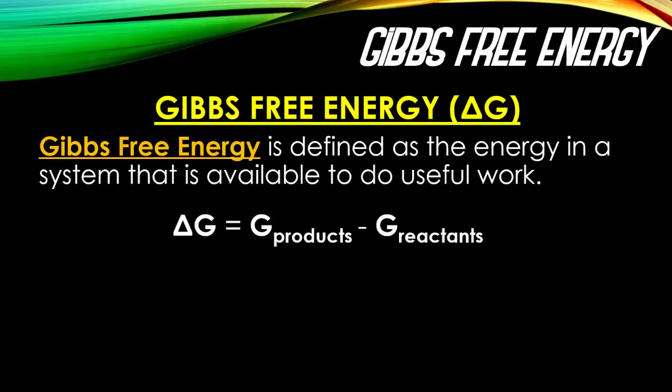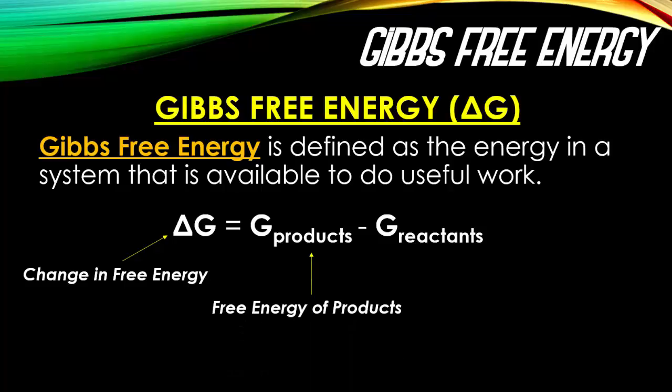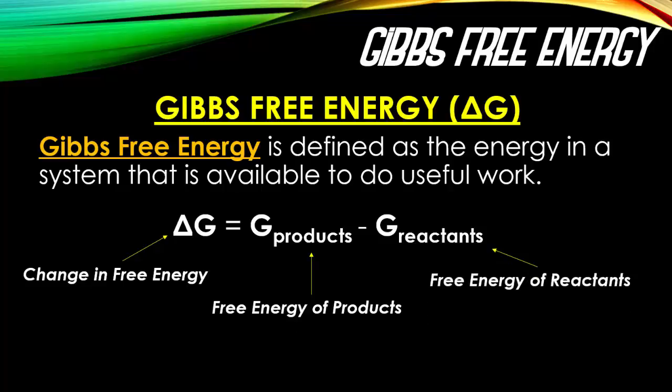Looking at this formula, delta G is equal to the energy of the products minus the energy of the reactants. Delta G means a change in free energy — whether or not our system or chemical reaction can undergo a spontaneous reaction. The G of products represents the amount of energy the products have, and the G of reactants represents how much energy the reactants have.